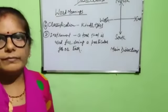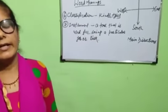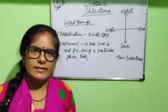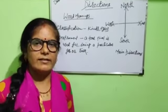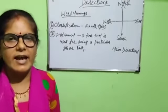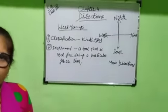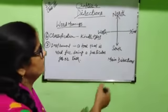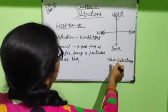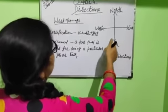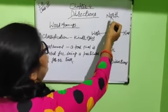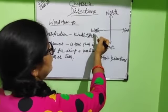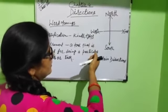Now tell me children, in which direction the sun rises? The sun rises in the east and sets in the west. The main directions are north, south, east and west.